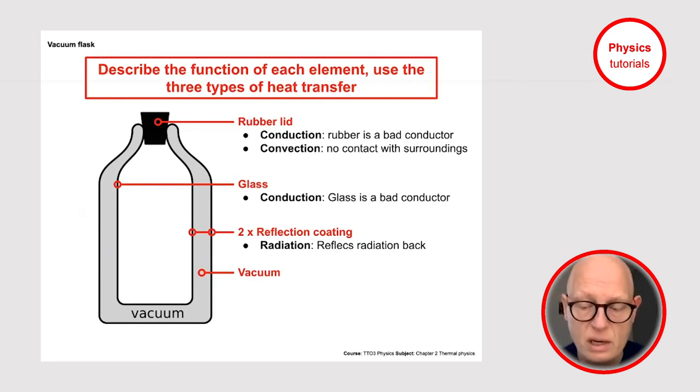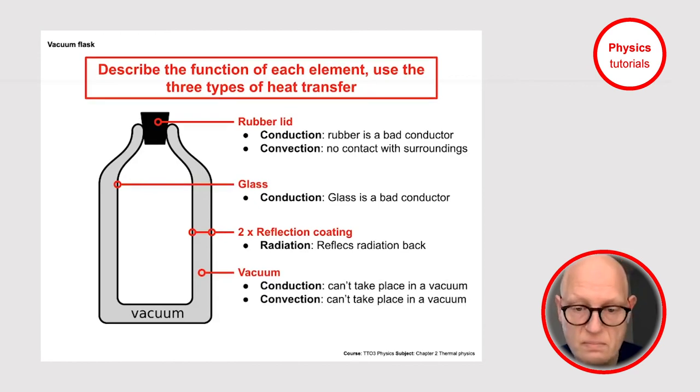And then last but not least, a very important part is the vacuum layer. Because there are no particles inside a vacuum, there cannot be any conduction. It's a very good way to prevent conduction—just suck out all the particles. Another thing is that convection also cannot take place in a vacuum because for convection you also need particles. You need particles which can flow, right? A liquid or a gas. So in this case there is no gas which can flow.